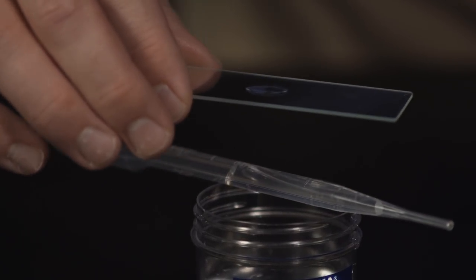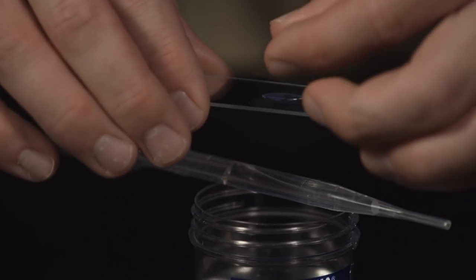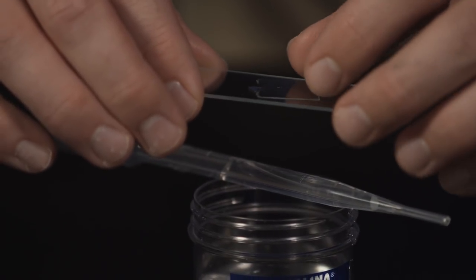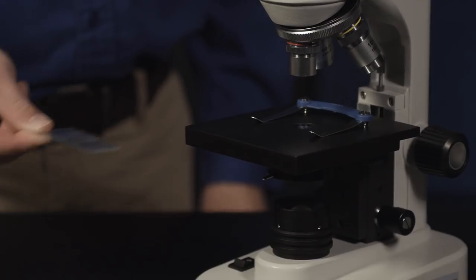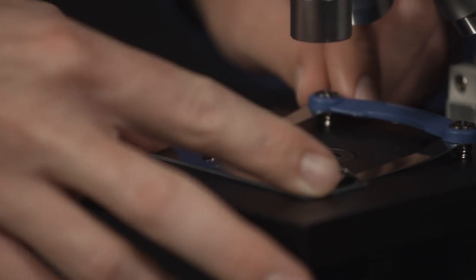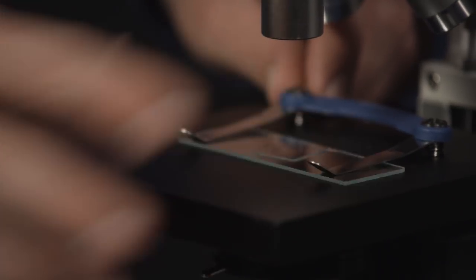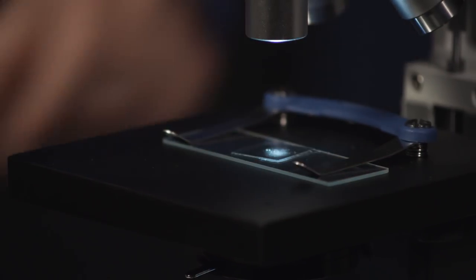Now you can take your slide and view amoeba up close using a compound microscope. Set your microscope onto the lowest power objective and place the slide onto the stage. Locate your amoeba using the lowest power objective.